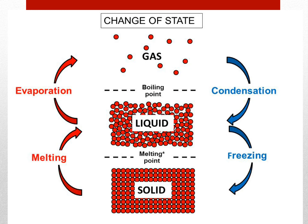What is evaporation? Evaporation occurs when particles escape from a non-boiling liquid and become a gas. It does not require reaching the boiling point — liquid changes state to gas through evaporation.